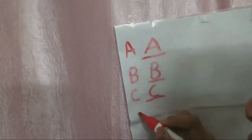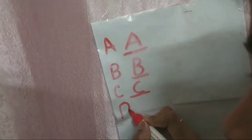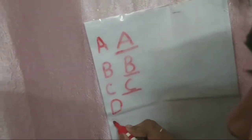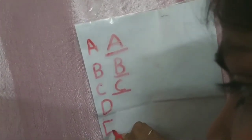And then we will write capital letter D. First a standing line, then a big half circle. Okay. Then E. First a standing line, then three sleeping lines. F. Standing line, two sleeping lines.